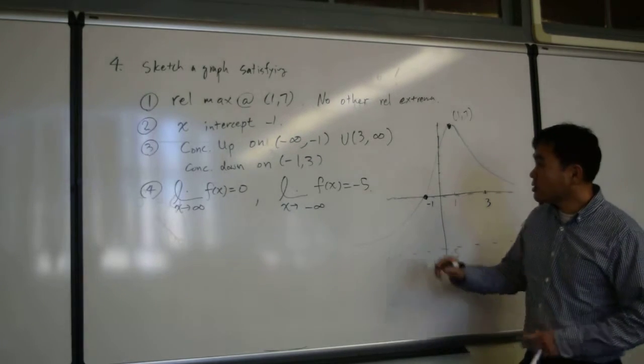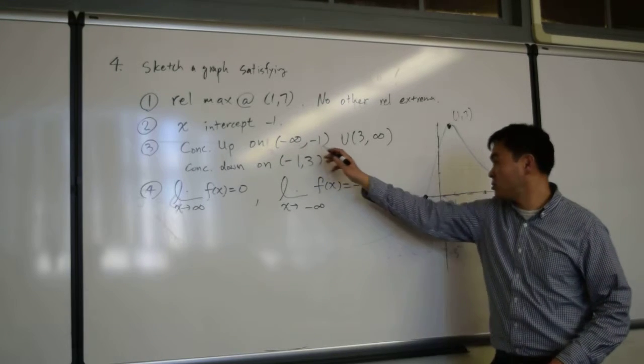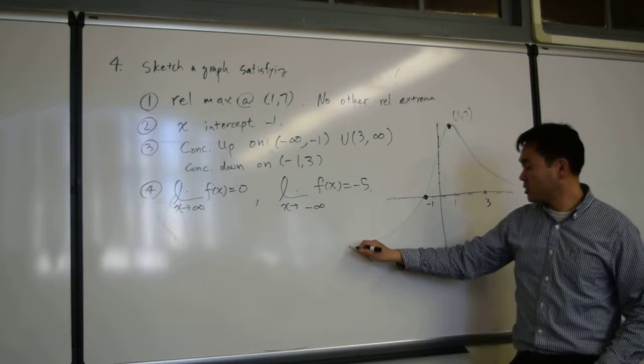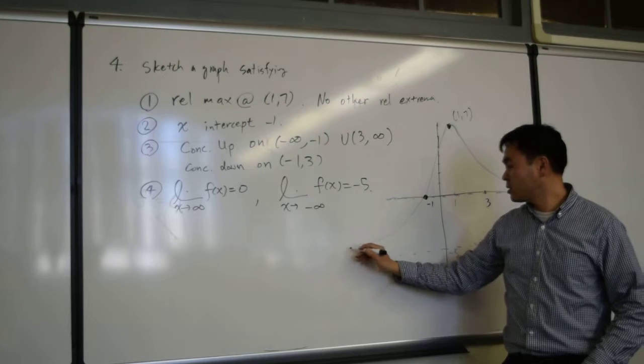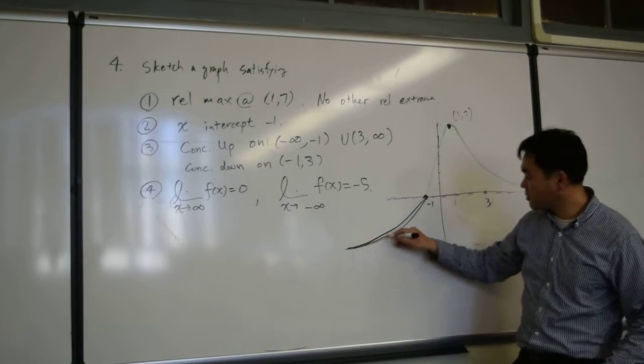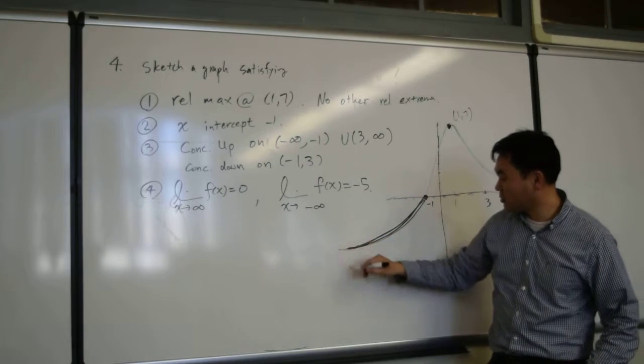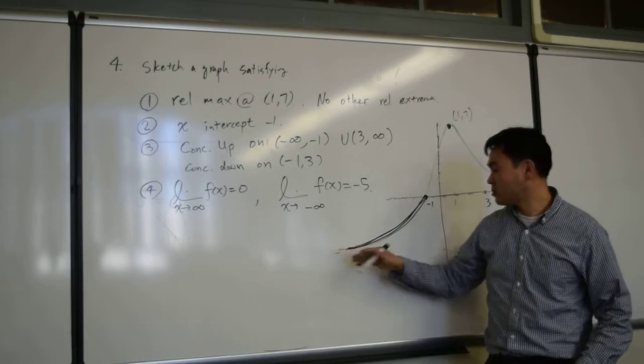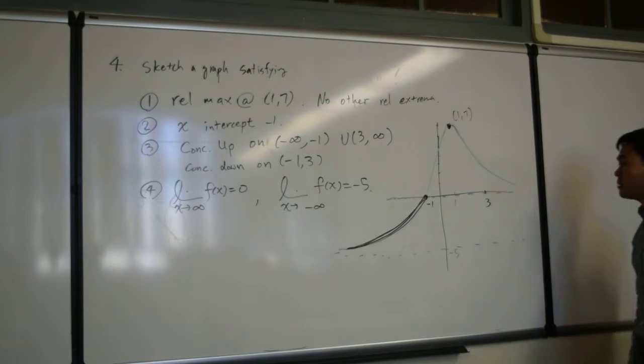Concaving up from negative infinity to negative 1 means it has to be curved as if something is pushing from above. This is okay, that's perfectly good. It has to get closer and closer to negative 5.